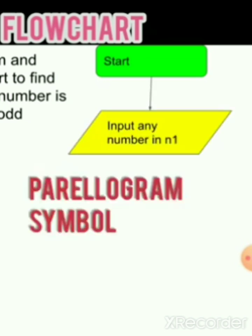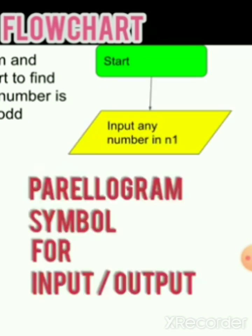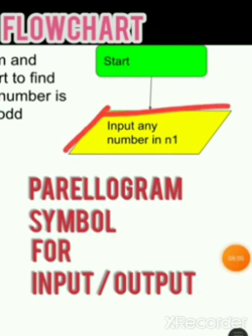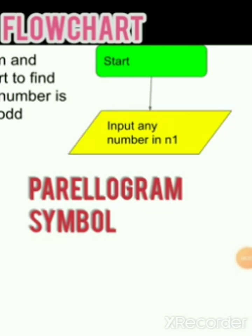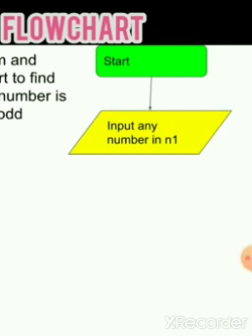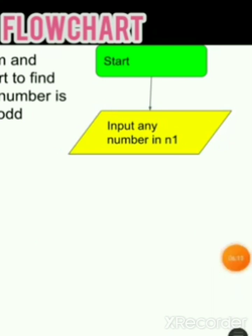The next symbol is a parallelogram. The parallelogram is used for input and output. Whenever you input or display anything, you use this symbol. I wrote n1 here, but you can write any variable name — a, b, c, whatever.